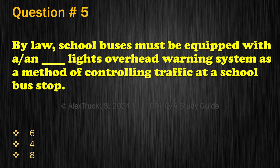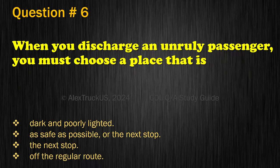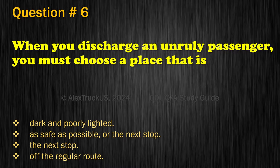Question 6. When you discharge an unruly passenger, you must choose a place that is: Dark and poorly lighted; As safe as possible; The next stop; or Off the regular route. The correct answer is: As safe as possible, or the next stop.